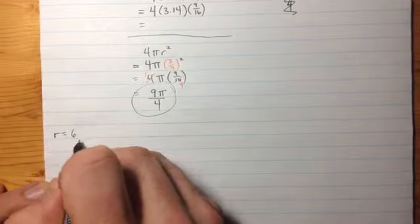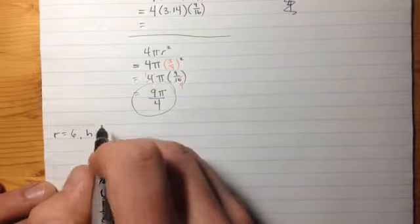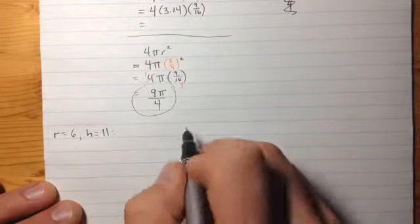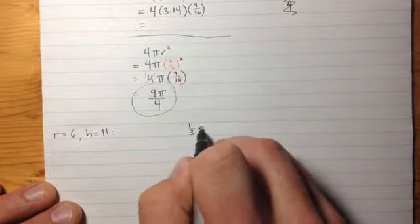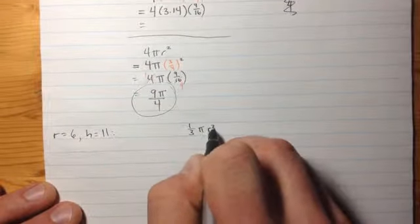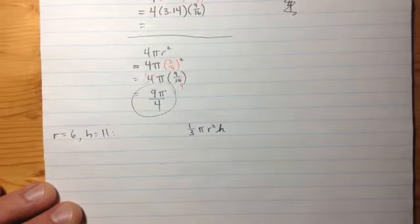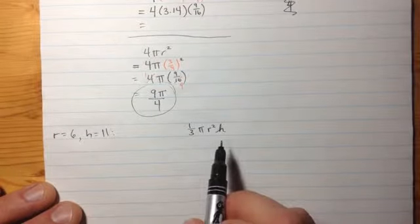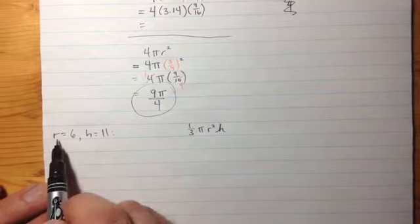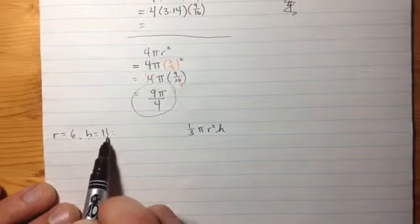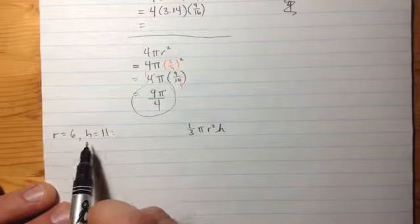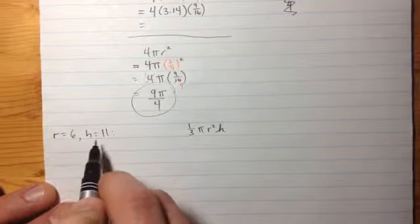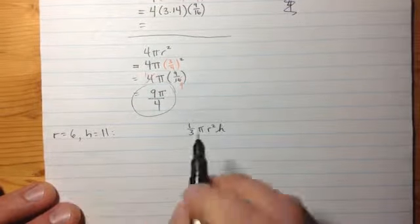When r is equal to 6 and h is equal to 11, evaluate this expression. 1 third times pi, again, times r squared times h. Now this will give us the volume of a cone with a radius of 6 and a height of 11. This expression is for any cone. We're going to specifically look at the one cone that has radius 6 for the base and the height of 11.